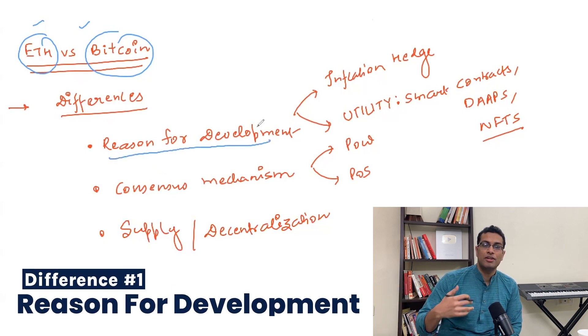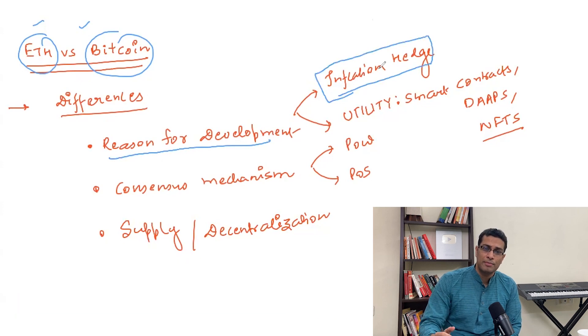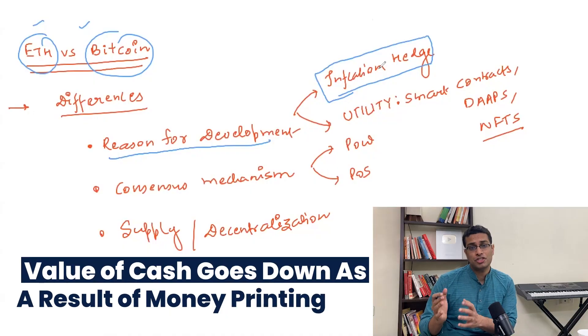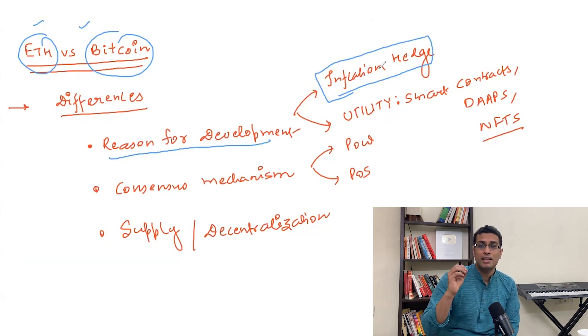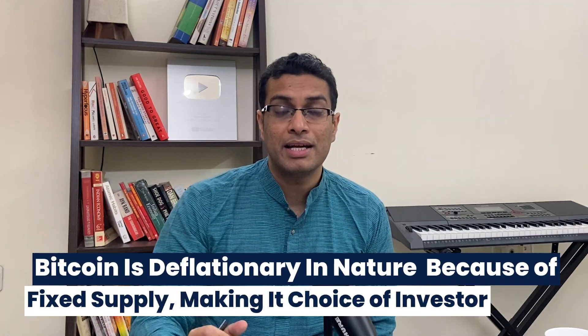The reason for development of Ethereum and Bitcoin is different. Bitcoin has been developed as a hedge against inflation. Governments print a lot of currency every year, which causes the value of cash to go down — currencies are inflationary in nature. A classic case is from 2008 onwards when the US government printed a lot of money, a concept called quantitative easing, and continued during the 2020 COVID crisis. Bitcoin, on the other hand, has a limited supply of 21 million Bitcoins, making it a deflationary currency.